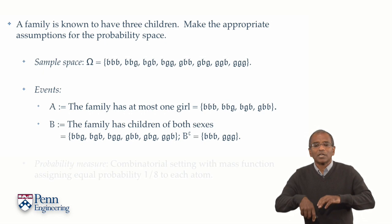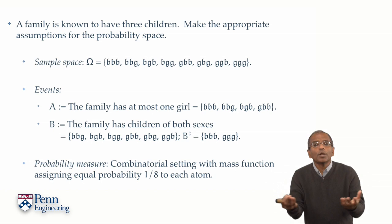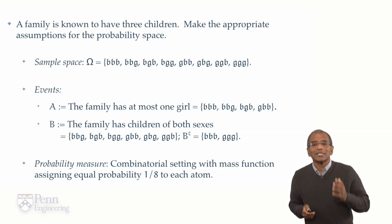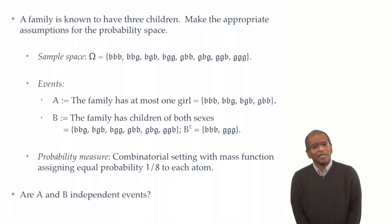Excellent. Now, let's put together a probability measure. The natural probability measure is a combinatorial setting. It is uniform across the possibilities. And therefore, we look at an atomic measure which puts mass 1 over 8 on each atom. Each triple of genders has got probability 1 in 8. And here is now our question.